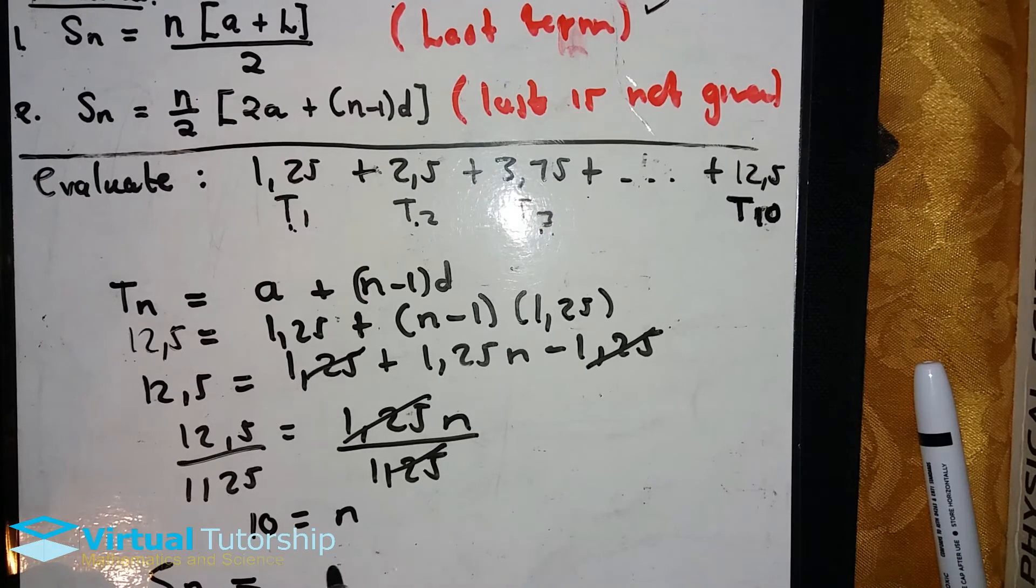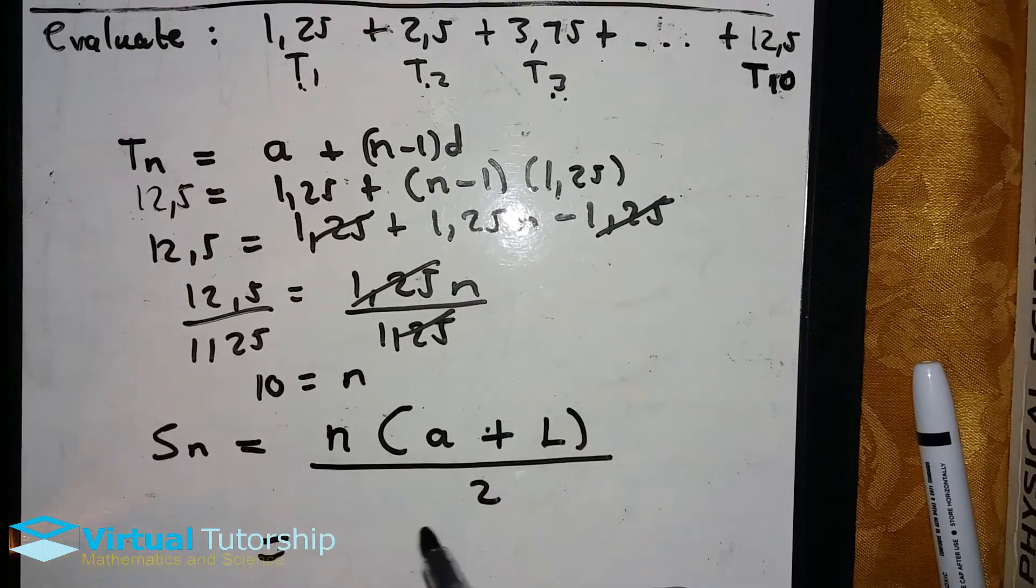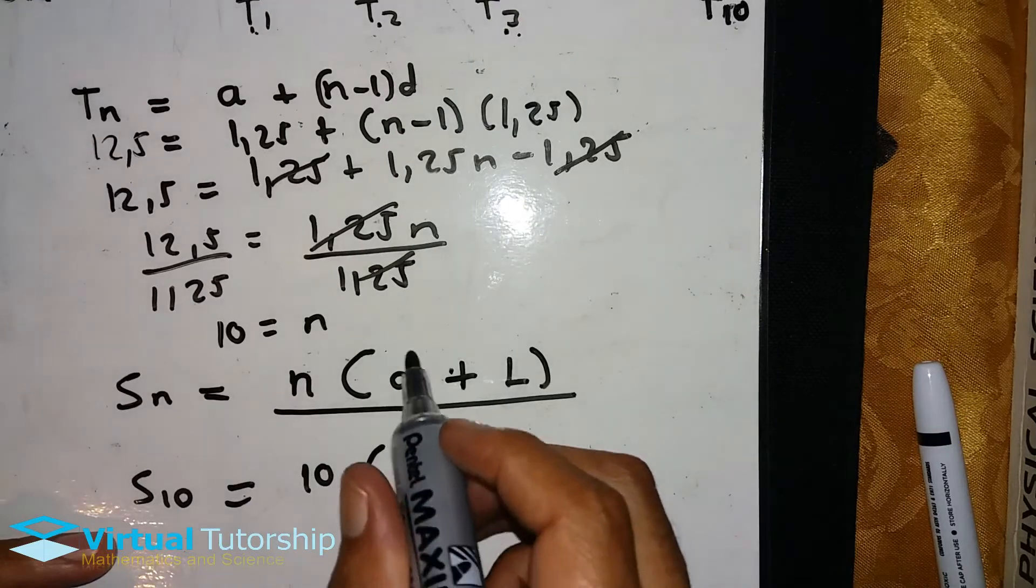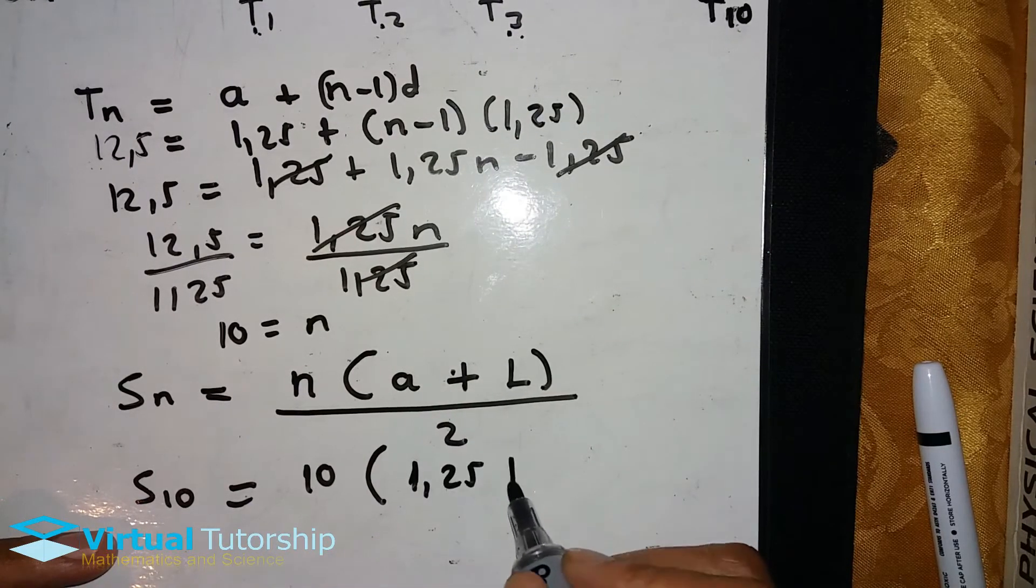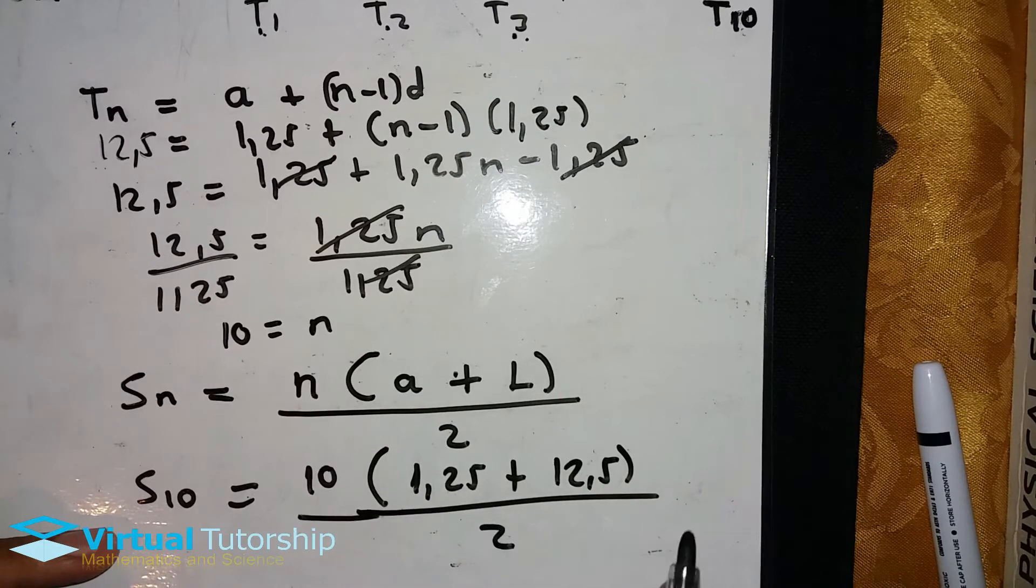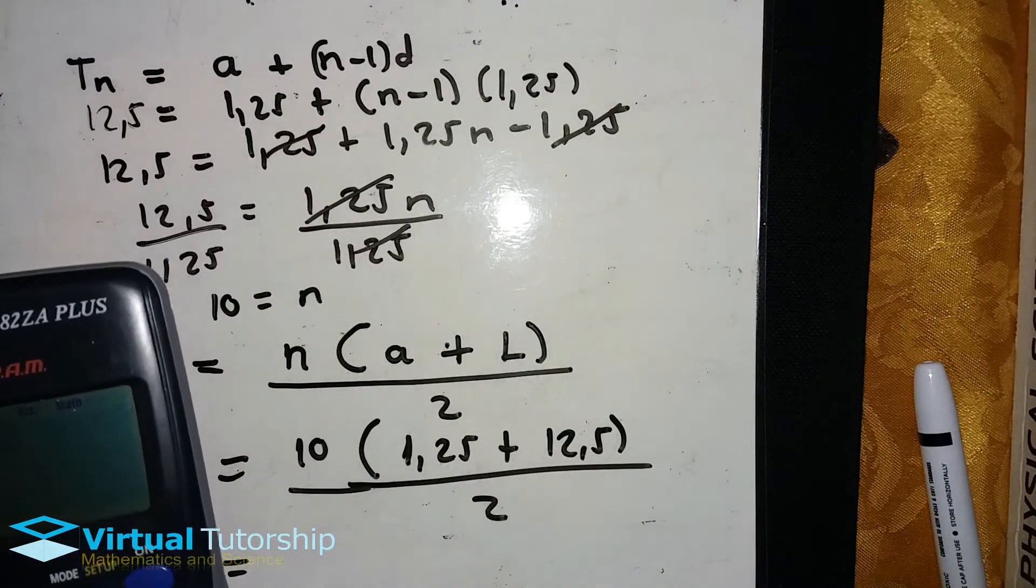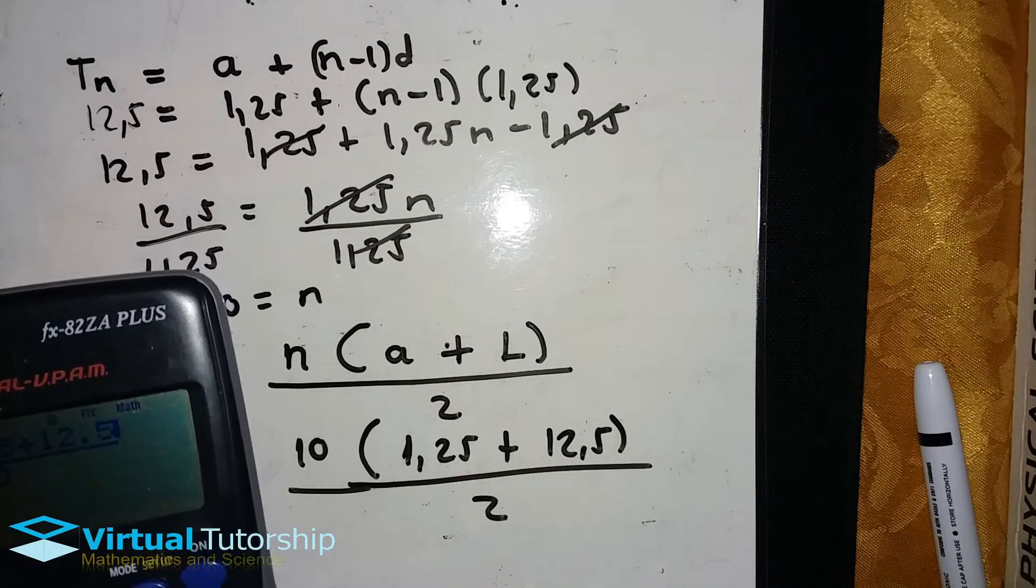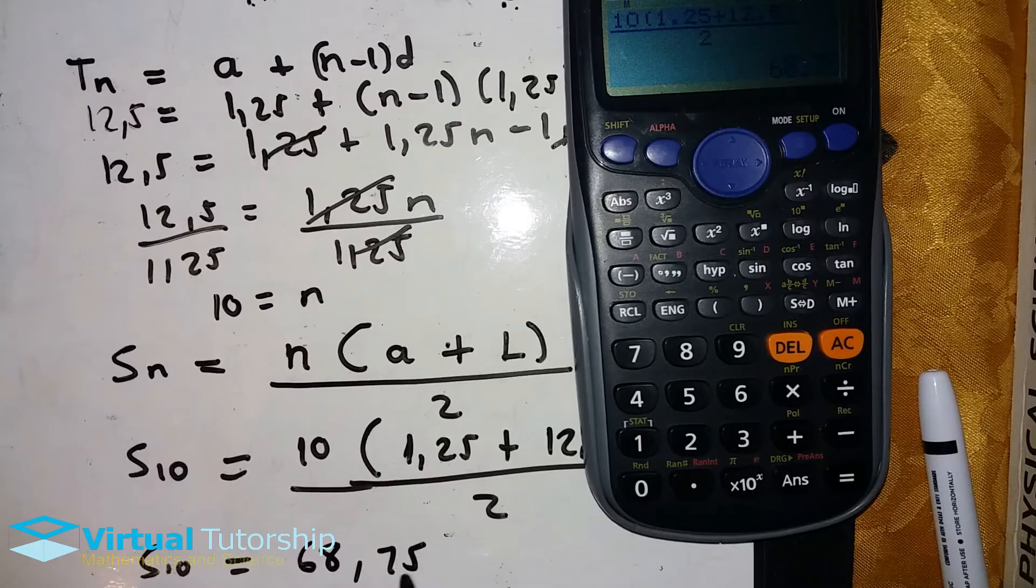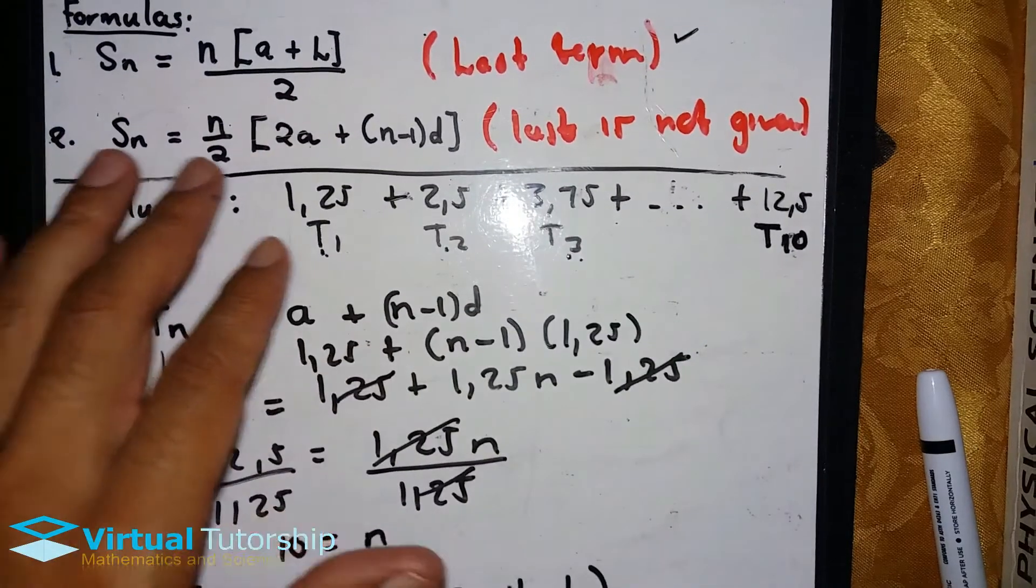Now we use Sₙ = n(a + L)/2. S₁₀ = 10(1.25 + 12.5)/2. This equals 10 × 13.75/2, which is my final answer.